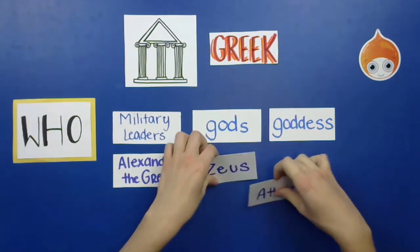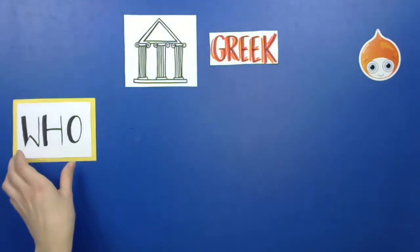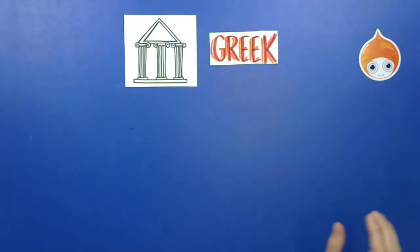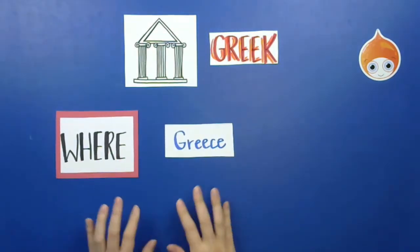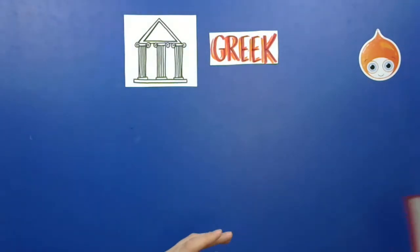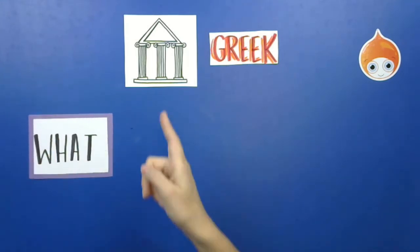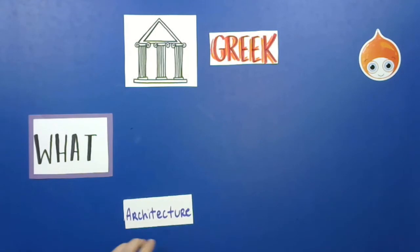Greek people are from Greece. There's no specific island — it is just Greece, the whole country. Now let's talk about the what. What did the Greek people create? They created a lot of things. One of the first things to talk about is their architecture.